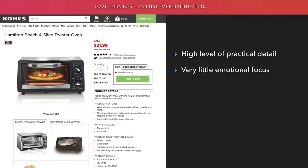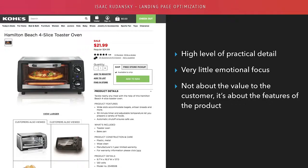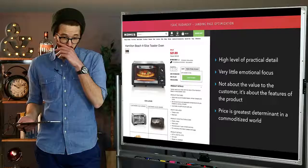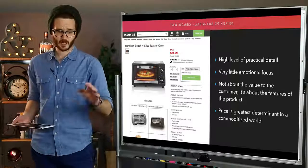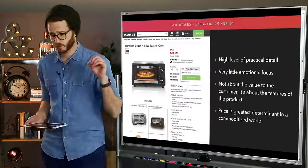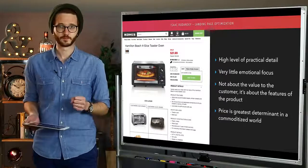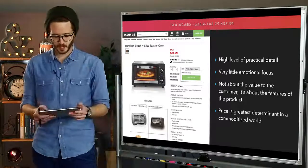Very little emotional, psychological focus on how a person is going to feel buying this product. That's not important with this type of marketing. Again, it's not about the value. It's about the features of the product. And the number one greatest determinant here in a commoditized world is price. If you see that big red price, sale $21.99, that's the most important information that Kohl displayed on this product page.